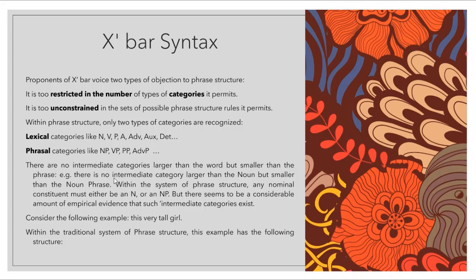There is no intermediate category larger than the noun but smaller than the noun phrase. Within this system of phrase structure, any nominal constituent must either be an N or an NP — there is no other category. We have only lexical categories and phrasal categories. But there seems to be a considerable amount of empirical evidence that such intermediate categories exist.